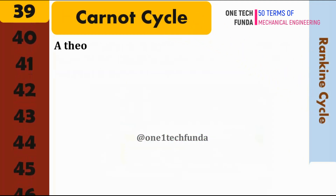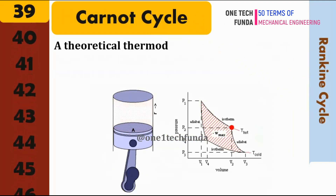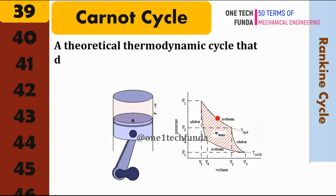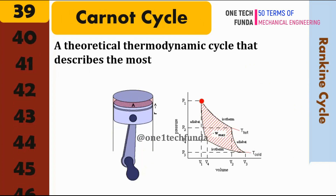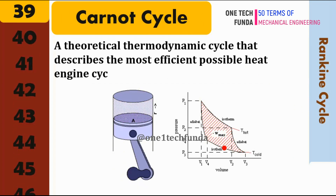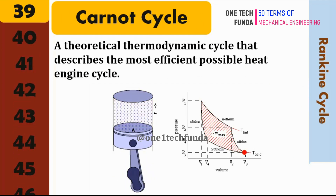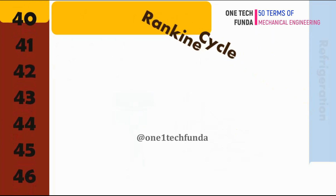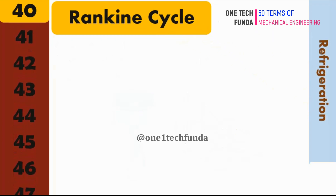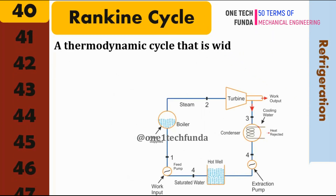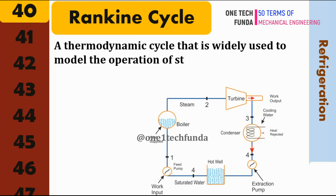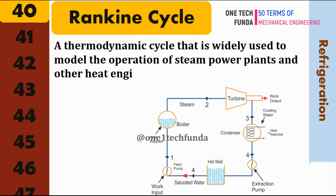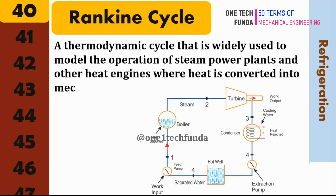Carnot Cycle: a theoretical thermodynamic cycle that describes the most efficient possible heat engine cycle. Rankine Cycle: a thermodynamic cycle that is widely used to model the operation of steam power plants and other heat engines where heat is converted into mechanical work.